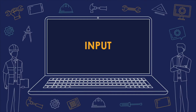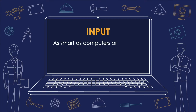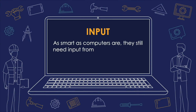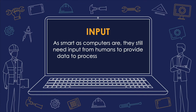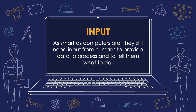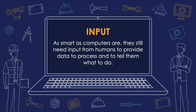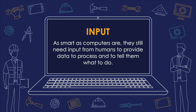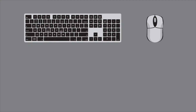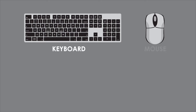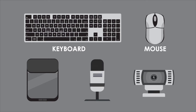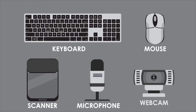Let's start with the input. As smart as computers are, they still need input from humans to provide data to process and to tell them what to do. Computers today accept input from a variety of devices. The two you are probably most familiar with include the keyboard and the mouse. Almost all modern computers have these devices. Other common input devices include scanners, microphones, and webcams.